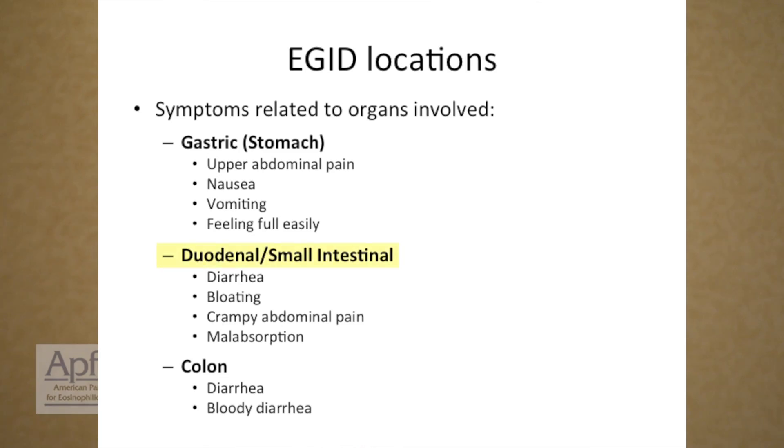In small intestinal or eosinophilic gastroenteritis, you can see diarrhea and bloating from malabsorptive features. You can see crampy abdominal pain and malabsorption from the lining of the small bowel being affected. You can also get bloating and diarrhea from eosinophilic infiltration of the muscle layer of the small bowel, which causes an abnormality in the motility of the small bowel, predisposing to bacteria remaining in the small bowel and leading to bacterial overgrowth.